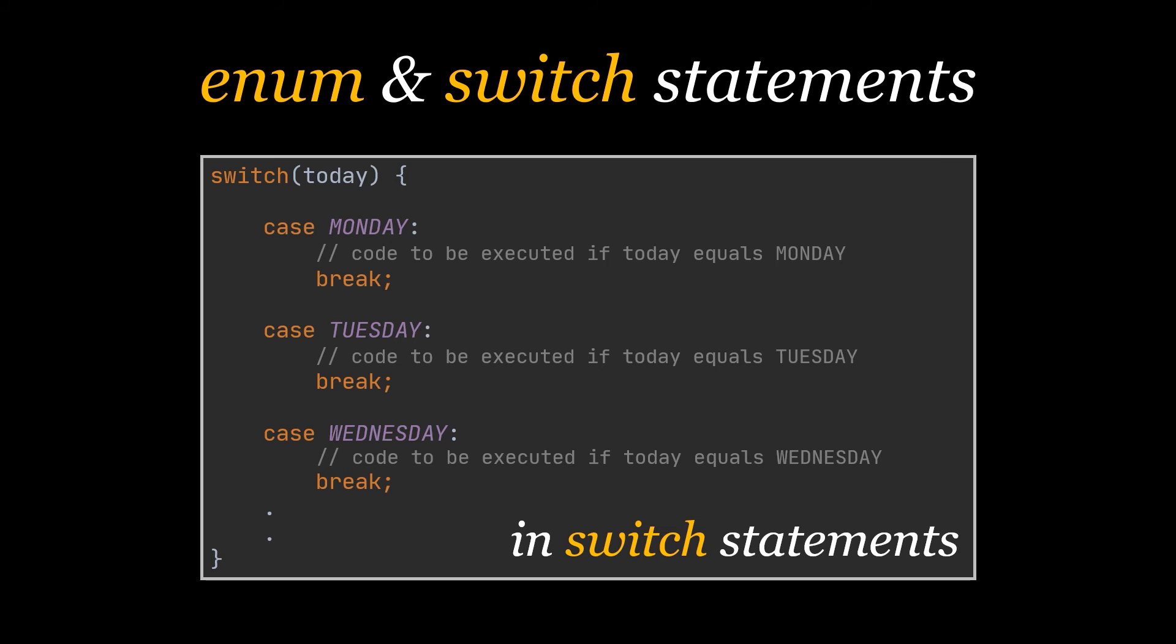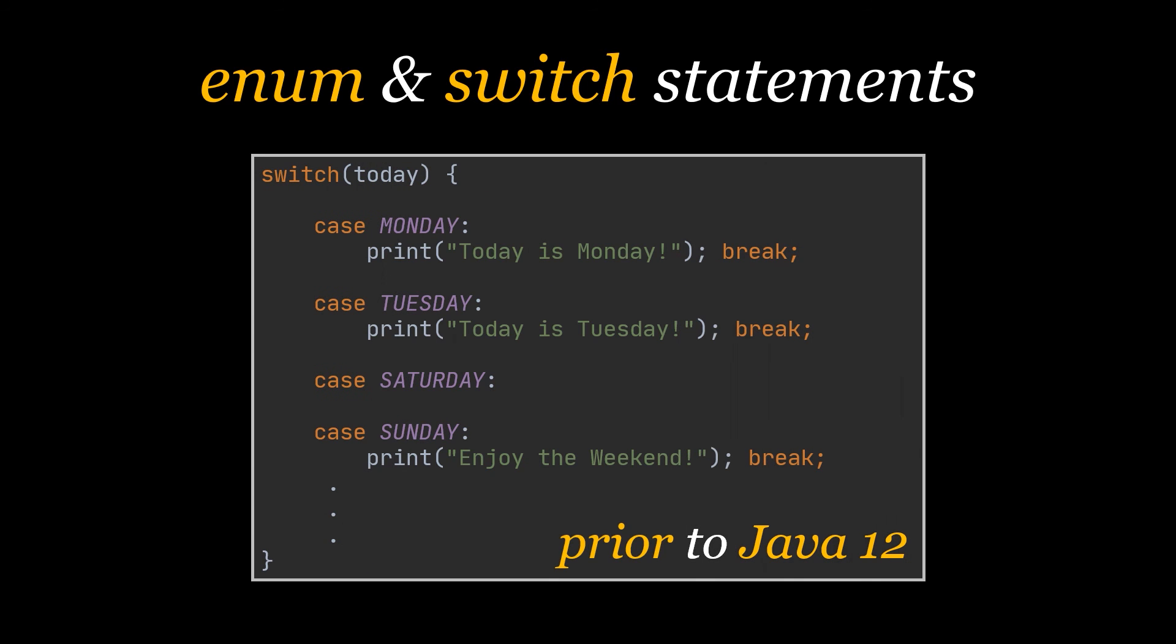As you can see in this example, a case can be created for each constant of the enum, thus avoiding all possible comparison failures which can be encountered in case of string comparisons, for example. If you recall how we just wrote the switch statement, well actually that was one way of writing it, and that was the case prior to Java 12.